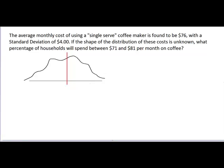And because we don't know the shape of the distribution, you all know that with the shape of the distribution unknown, the empirical rule no longer applies and so we have to resort to using Chebyshev's theorem.